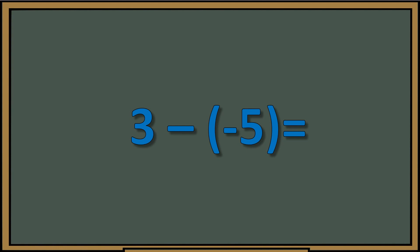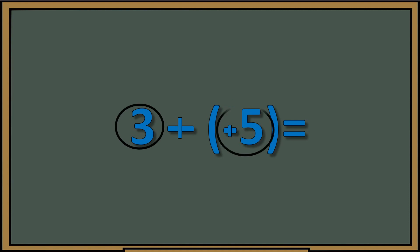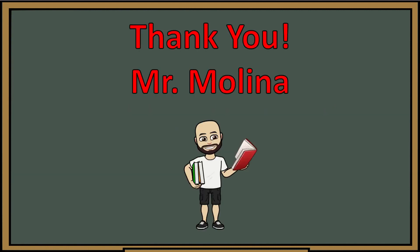This one has a minus and a negative next to each other. What do we do? Chop-chop. Circle the number with the sign in front; circle the number with the sign in front. It gives us a three and a positive five. In this case the answer should be eight.